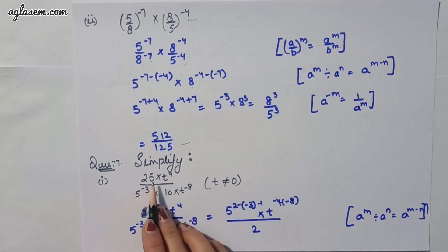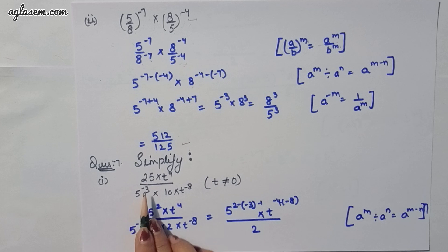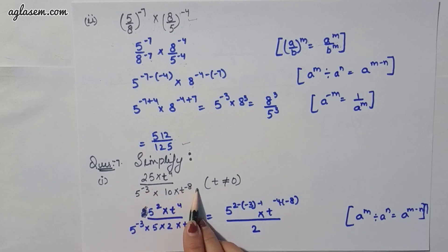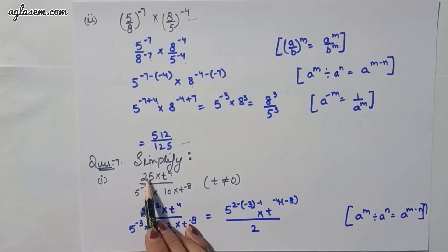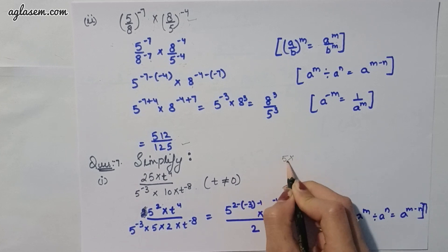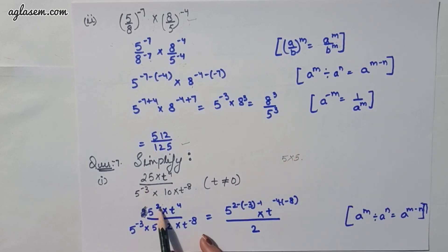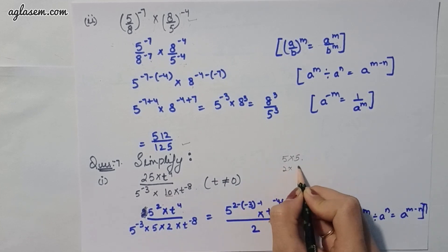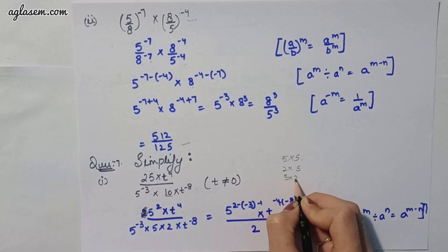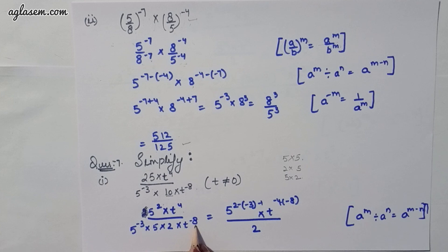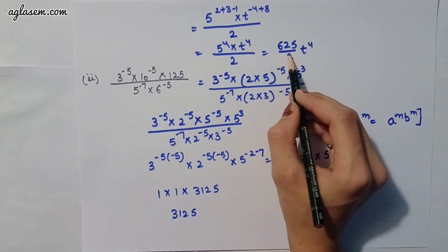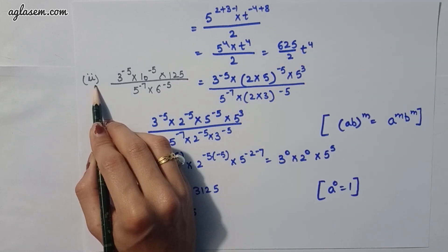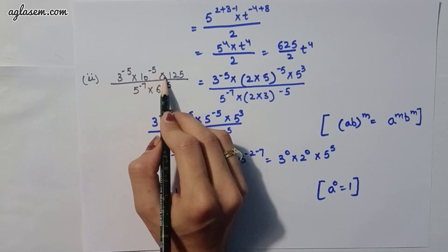Moving to the seventh question: simplify. Part 1 is 25t^4 divided by (5^(-3) × 10 × t^(-8)), where t ≠ 0. We write 25 as 5^2, and 10 as 5 × 2, then apply exponent rules to combine powers of 5 and t. Solving this gives the answer 625 / (2t^4).